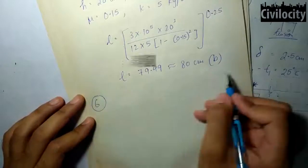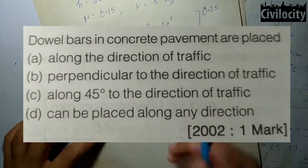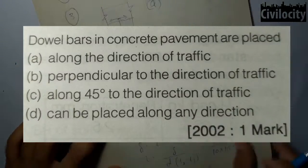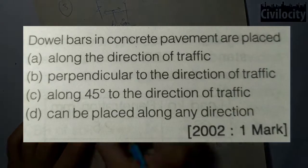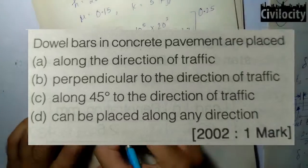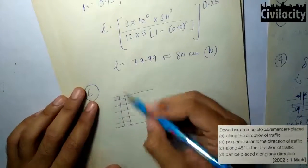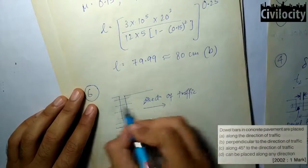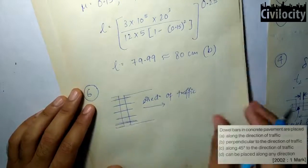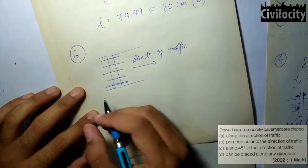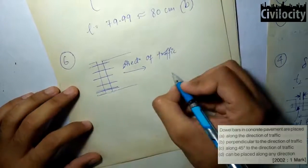This question asks about the direction in which dowel bars are placed in concrete pavement — along the direction of traffic, perpendicular to it, at 45°, or any direction. Recalling the layout of a CC pavement, dowel bars are always placed in expansion joints. Since expansion joints run transverse to traffic movement, the dowel bars are placed along the direction of traffic movement, that is perpendicular to the expansion joints.